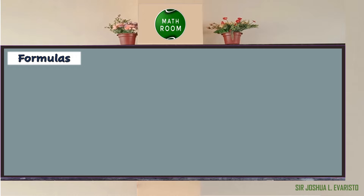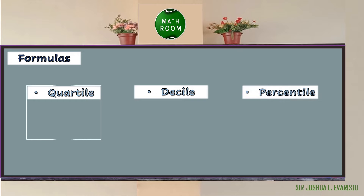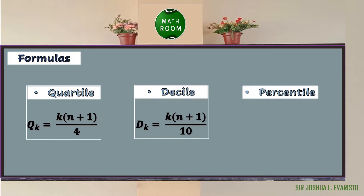Let me show you the formulas we are going to use. For quartile position, Q sub k is equal to k times (n plus 1) all over 4. For decile position, D sub k is equal to k times (n plus 1) all over 10. For percentile, the denominator is 100. Notice the only difference is the denominator: 4 for quartile, 10 for decile, and 100 for percentile.